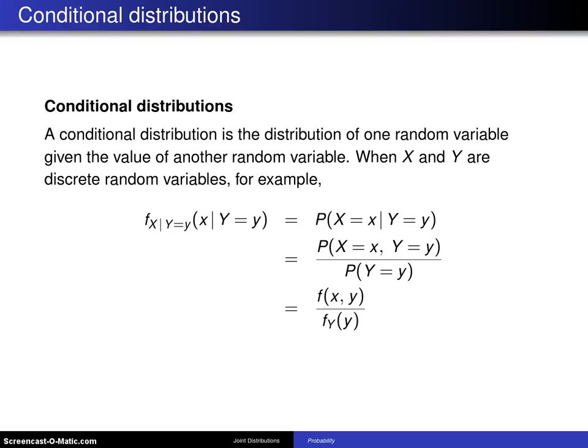As seen on the last few slides, the marginal distribution is the distribution of one random variable by itself. The conditional distribution is related but has a significantly different interpretation.